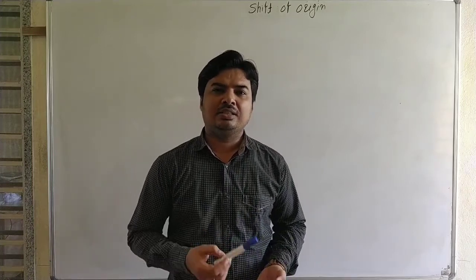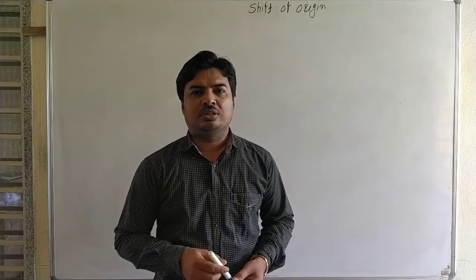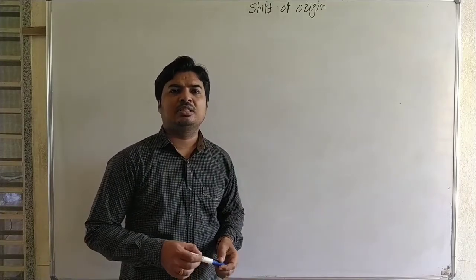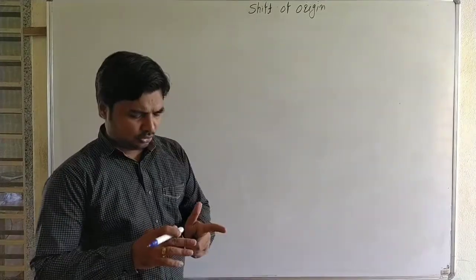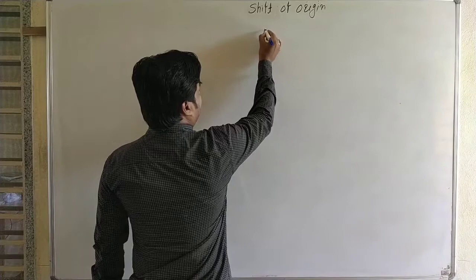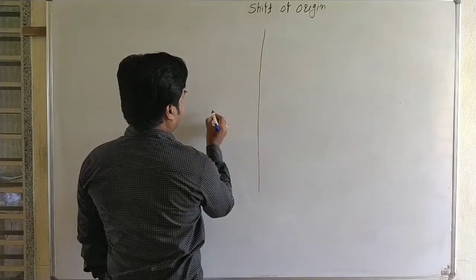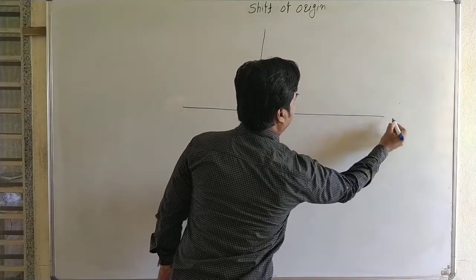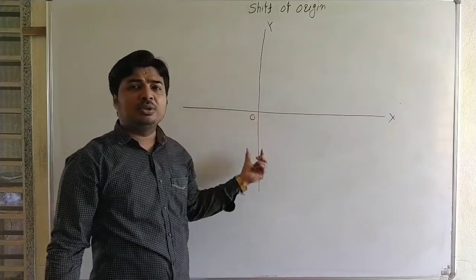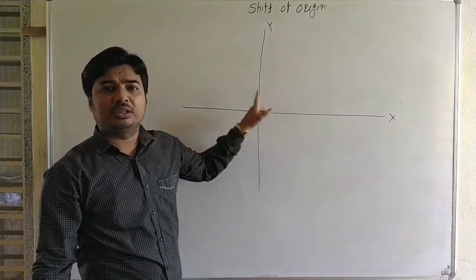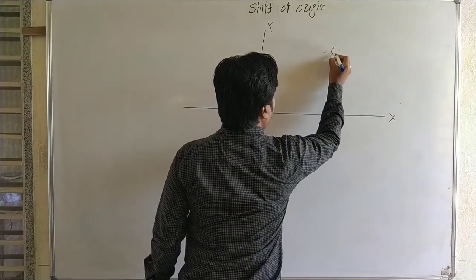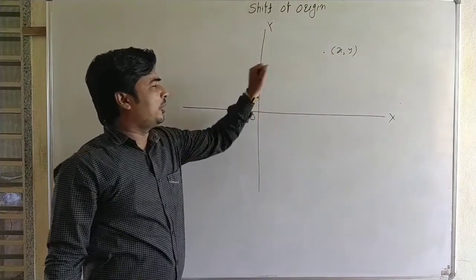Hello students. In the last lecture we saw the equation of locus and the definition of locus. Now we see the next topic of the chapter, that is the shift of the origin. The origin is the point of intersection of the coordinate axes — the x-axis and the y-axis. x comma y is any point in the plane.